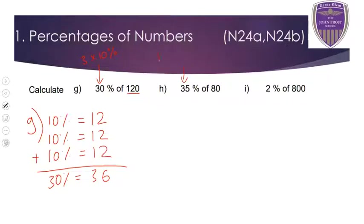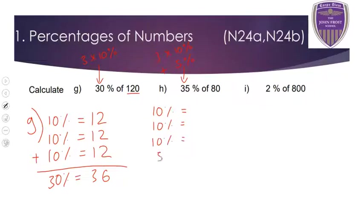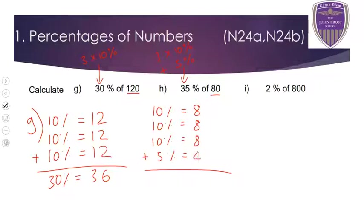For 35%, that's 3 lots of 10 plus 1 lot of 5. Any combination that gives you 35 will work. So 10% of 80 is 8 — divide by 10. That's 8, 8, and 8 for the three 10s, and 5% gives 4. So 35% equals 8 plus 8 plus 8 plus 4, which is 24 plus 4 equals 28.